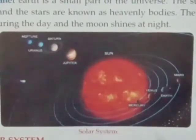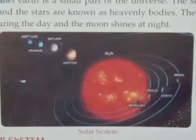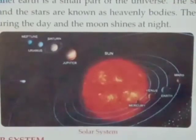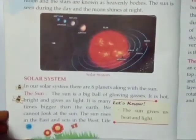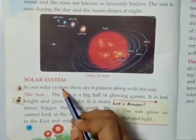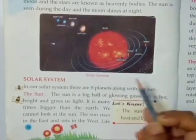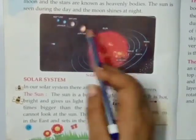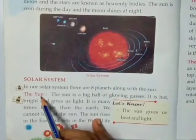Now, isme solar system mein joh main four hamarai is time parts hai jinnke baarye mein hamei padna hai, woh hai sun, moon, stars and our planet Earth. Thik hai? Aaj hum siraf sun ke baarye mein padheinge, aur baqi sab ke baarye mein next class mein. In our solar system, there are eight planets along with the sun — abhi humnay yehi kiya na, eight, right? Ab sun ke baarye mein padhtay hai.